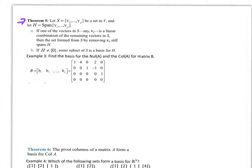Theorem 5: let S be a set {v1,...,vp} in V and let H be the span of that set. If one vector in S, say v_k, is a linear combination of the remaining vectors in S, then removing v_k still spans H. So we want to get as compact as possible — eliminate vectors that are linear combinations of others so the set is essentially linearly independent. If H doesn't equal zero, some subset of S is a basis for H.